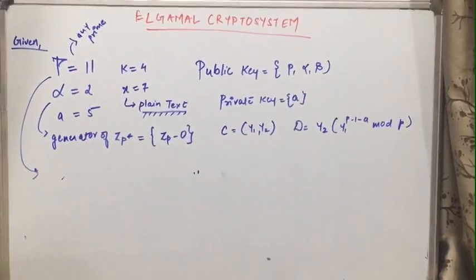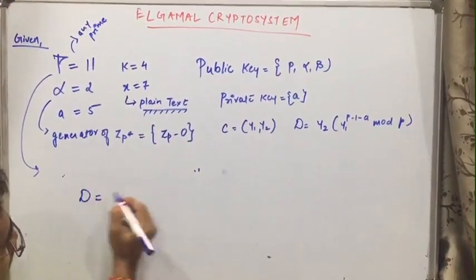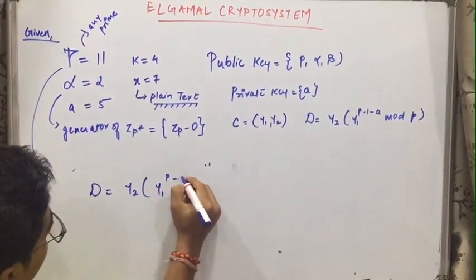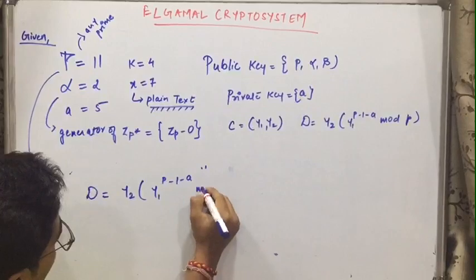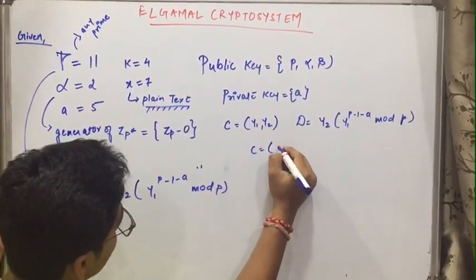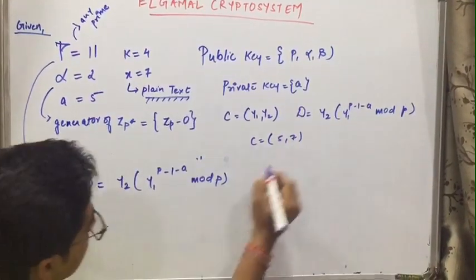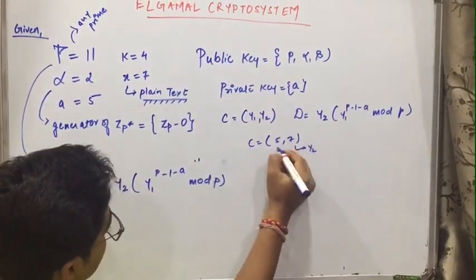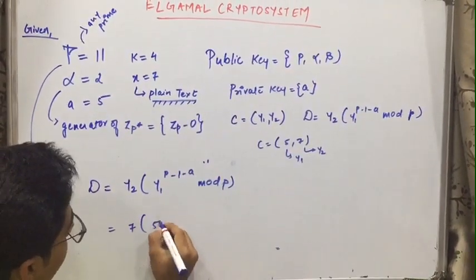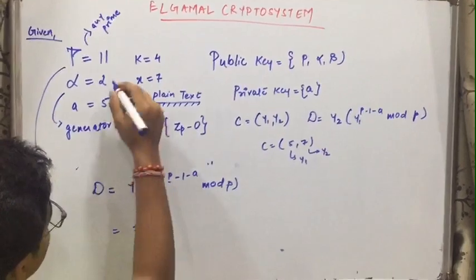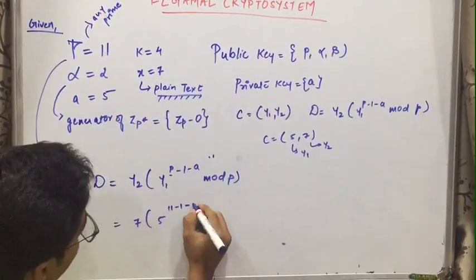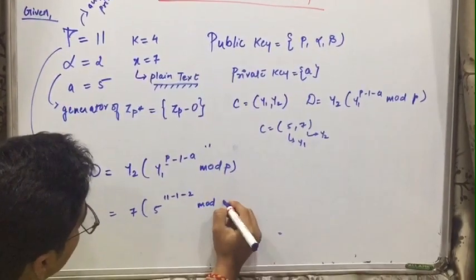So for decryption of this message, we have the formula d equals to y2 into y1 raise to p minus 1 minus a mod p. And ciphertext we got as 5 and 7 alright. So this was y2 and this was y1. This is y2 so that is 7. And here it is 5 raise to what is p? p is 11. 11 minus 1 minus a that is 2. Mod 11.